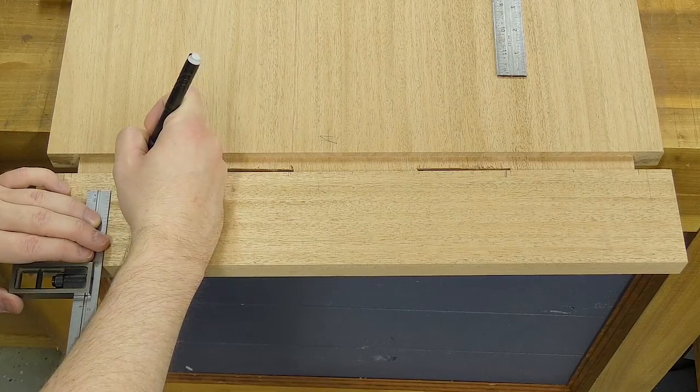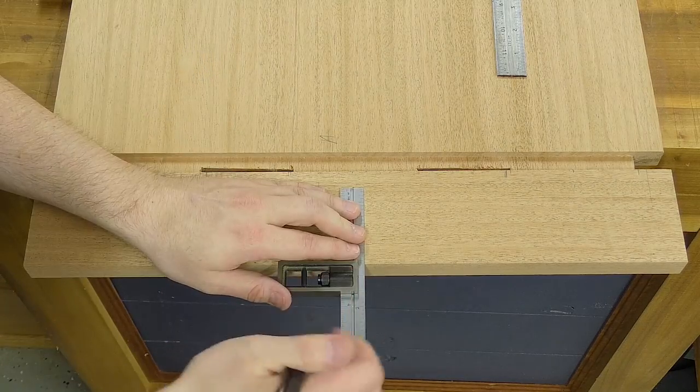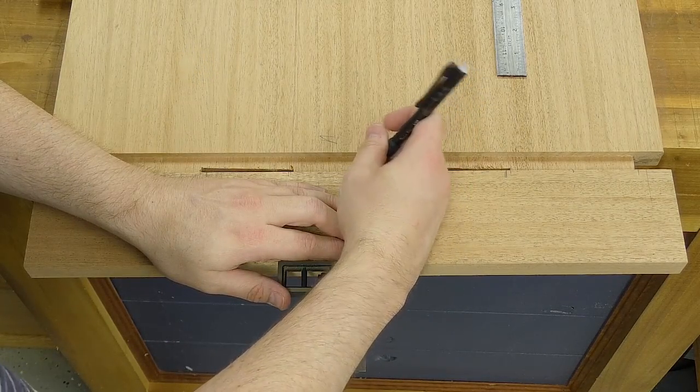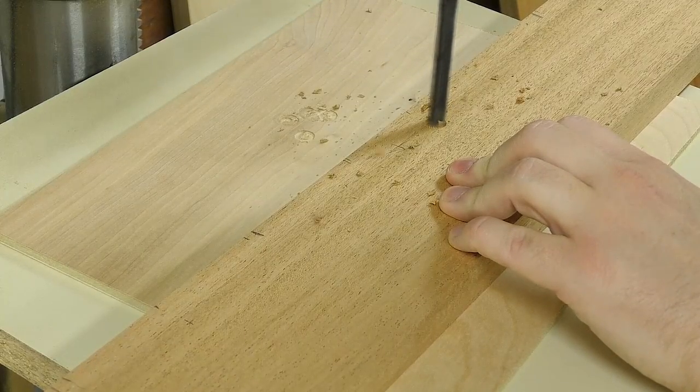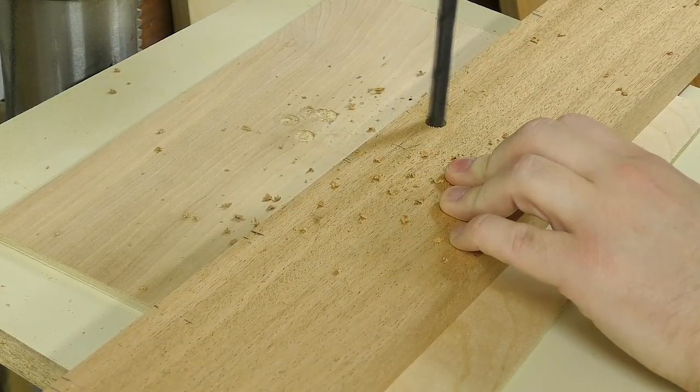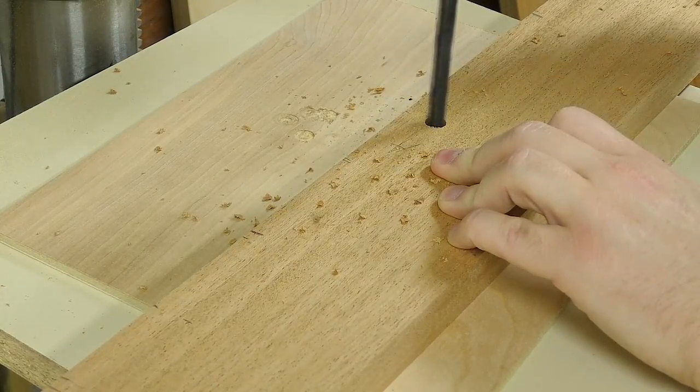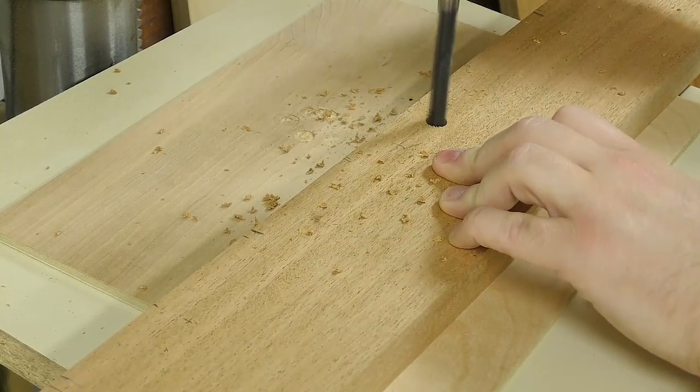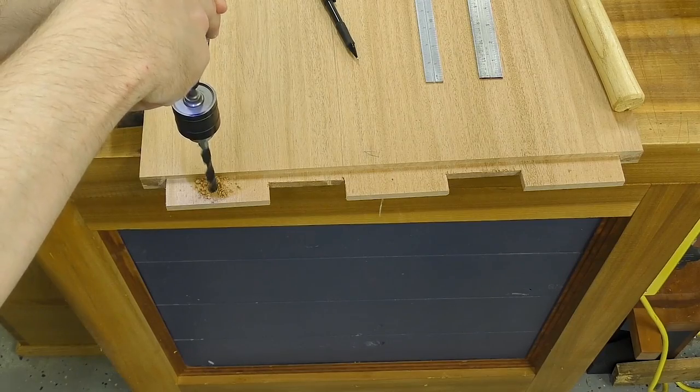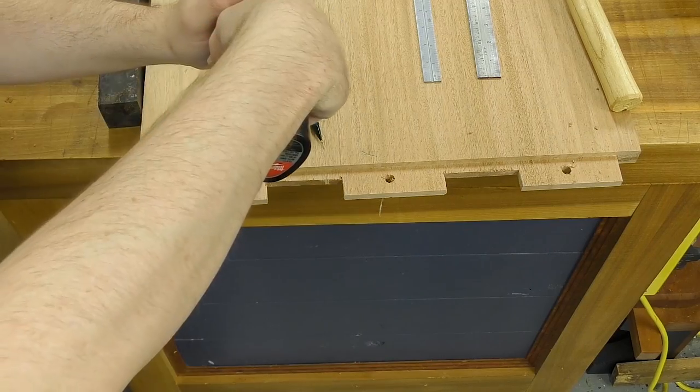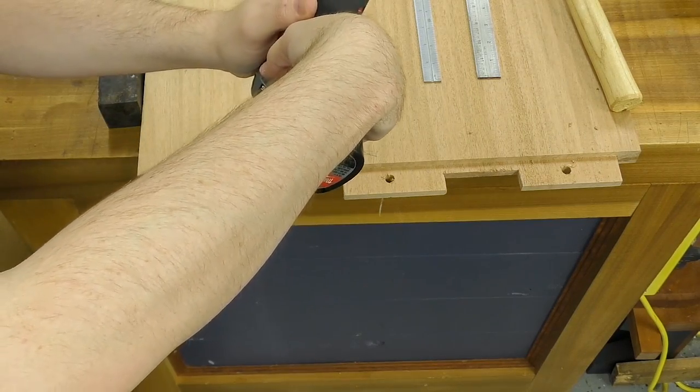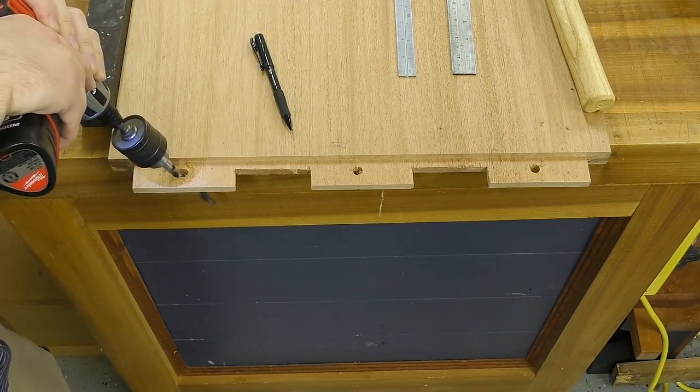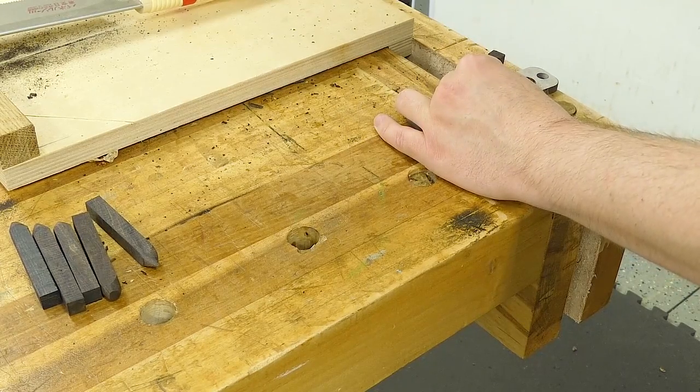Using a combination square, I next mark the breadboard ends for the drawboard pins. And then it's off to the drill press to drill the three eighths inch holes using a brad point bit. I wanted to mention that I'm using a sacrificial board under the breadboard ends to prevent any tear out. I then used the same three eighths inch bit to drill the holes in the tenons for the drawboard pins. I made sure to elongate the outer holes so the lid can expand and contract with seasonal changes.